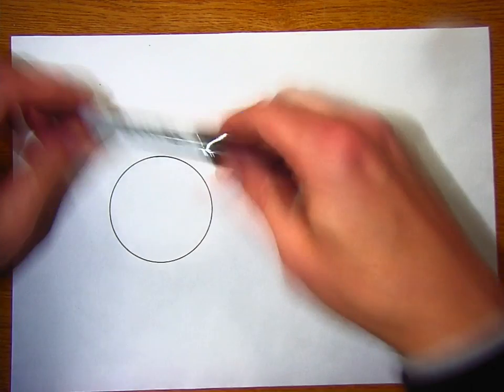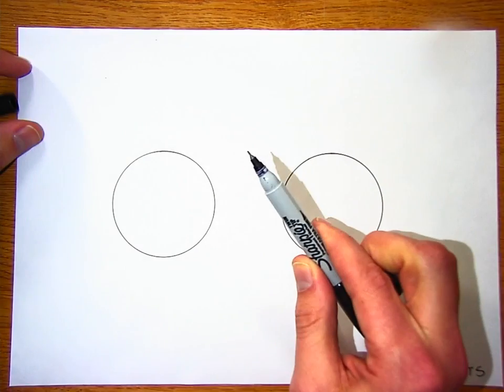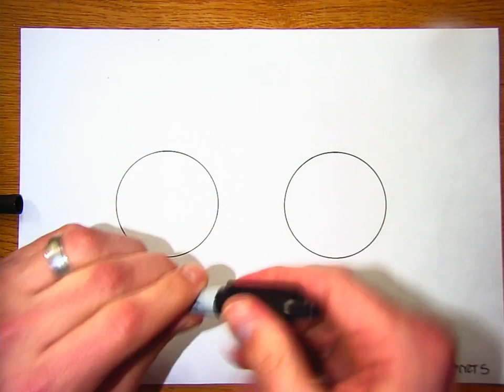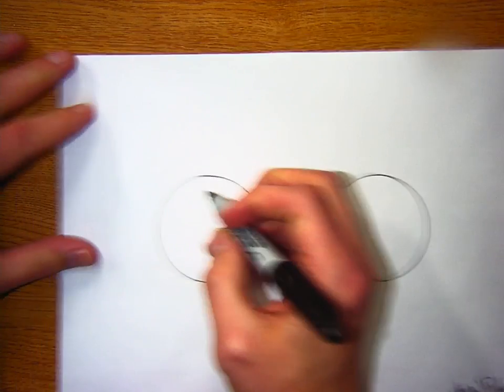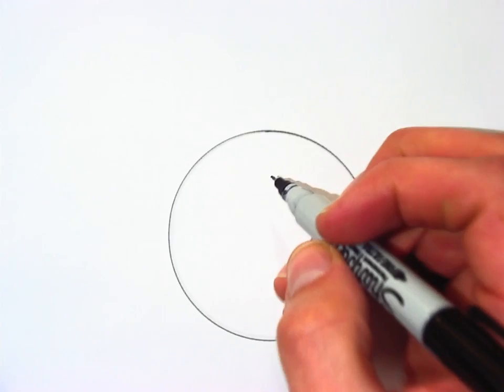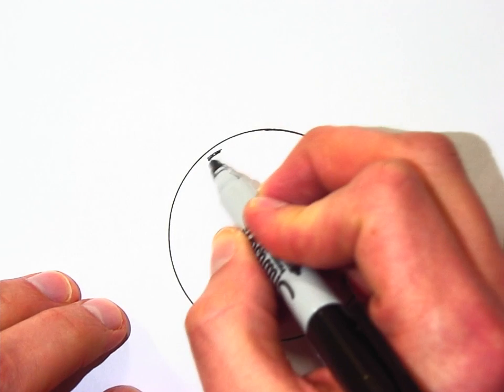Now I gave you a double-sided Sharpie marker on purpose. There's a skinny end and there's a chunky end. We're going to start with the skinny end, and I'm going to zoom in here.